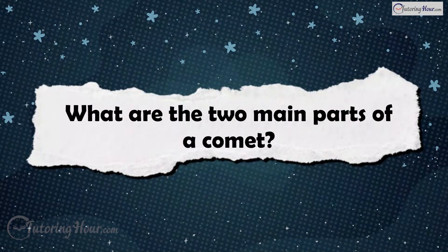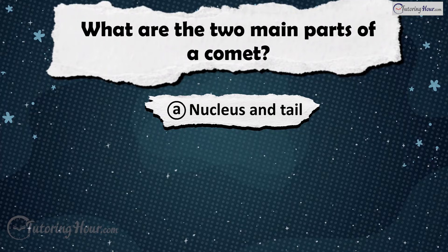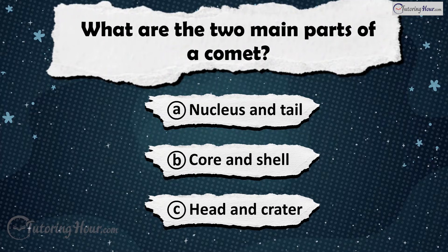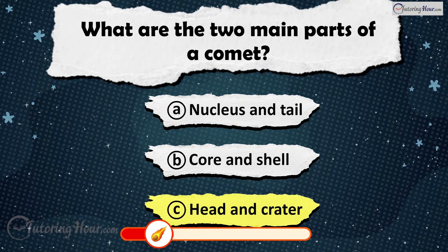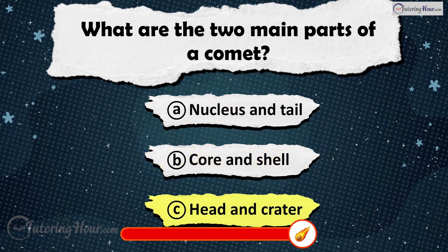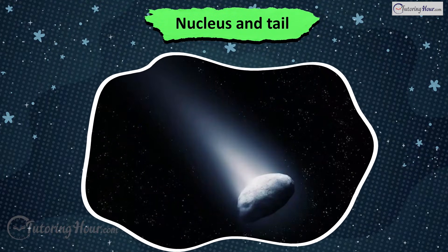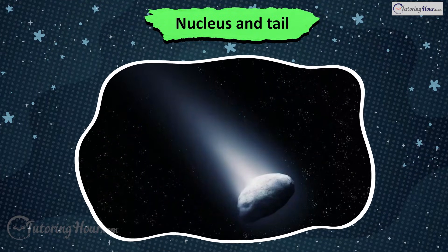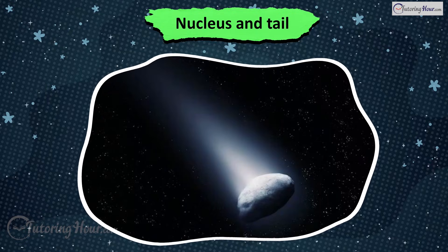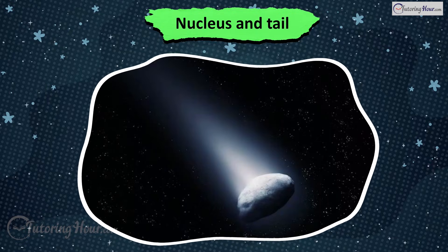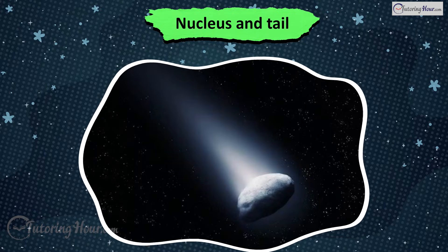What are the two main parts of a comet? Is it A) Nucleus and Tail, B) Core and Shell, or C) Head and Crater? The answer is Nucleus and Tail. The nucleus is the solid core, while the tail forms when the comet nears the Sun, starts to heat up and release gases, creating a beautiful glowing tail.